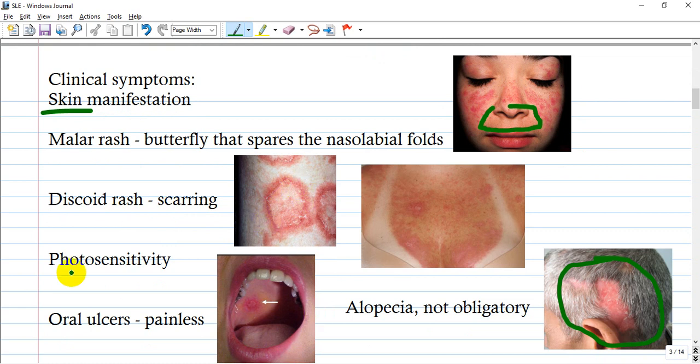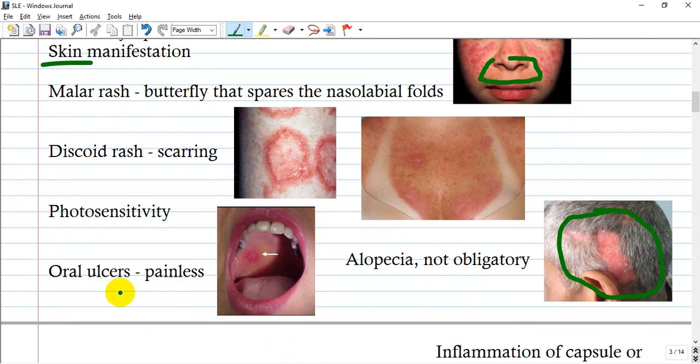Photosensitivity occurs after exposure of the body or skin under sunlight and you see this rash. Oral ulcers that are painless can be on the palate or gingiva, the internal part of the cheek. Alopecia is not obligatory but can also be found.